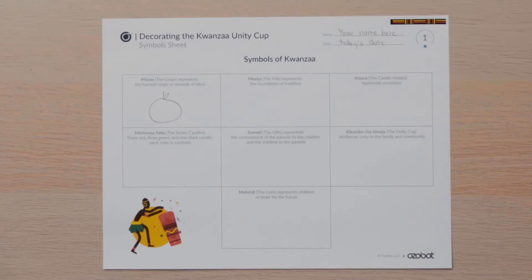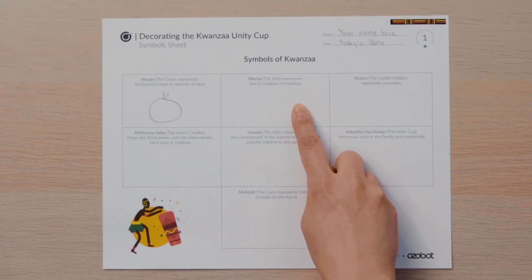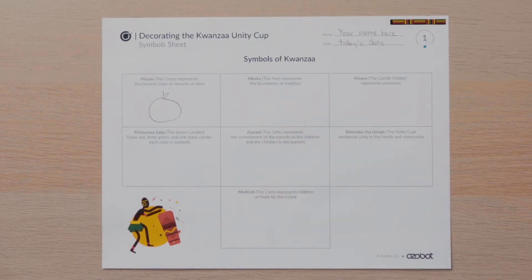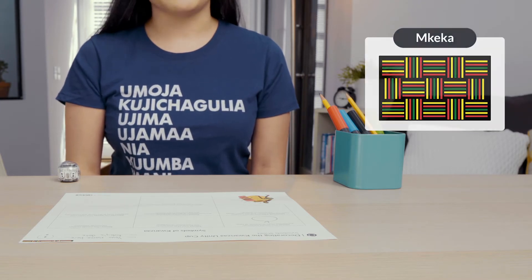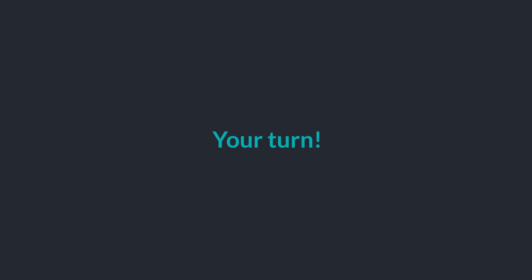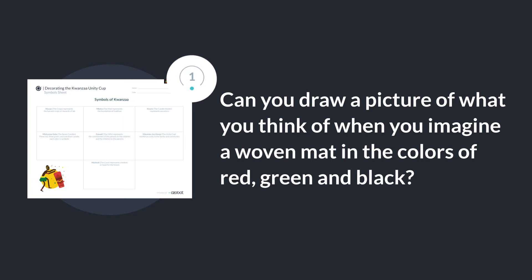The next box to the right says Makika, or the mat. The mat represents the foundation of traditions. It is usually a woven mat made of colors green, red, and black. It can include different designs in the weave of the mat. Can you draw a picture of what you think of when you imagine a woven mat in the colors of red, green, and black?